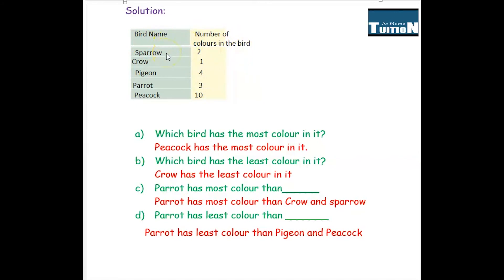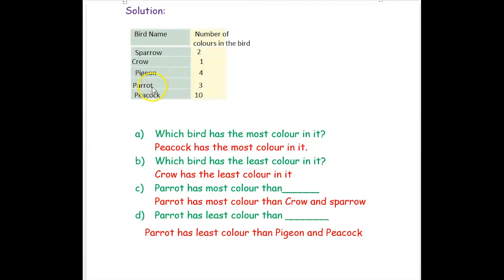Bird name and number of colors: sparrow has two colors. Crow has only one color — it is black. Pigeon has four colors in its body. Parrot has three different colors in its body. Peacock is a colorful bird, so we count at least ten colors. It has many colors. So we have now formed the smart chart.